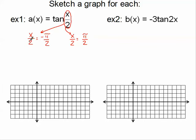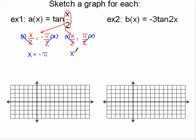I'm going to solve these two equations. I multiply both sides by 2 to cancel that out, and I get x equals negative pi. Doing the same step on the other side, x equals positive pi. These are my new vertical asymptotes.